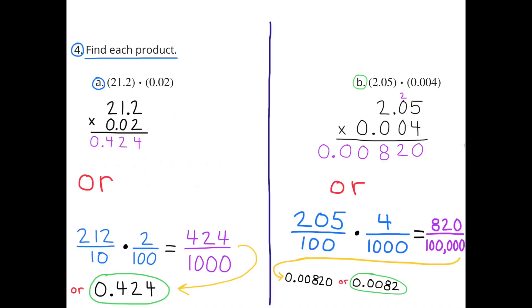Problem B: 2 and 5 hundredths times 4 thousandths. Again, you can set it up as a multiplication problem like I did on the top and the right-hand side. Or, you can set it up as multiplying fractions like I did on the bottom. 2 and 5 hundredths is the same as 205 hundredths. 4 thousandths is 4 over a thousand. So, 205 hundredths times 4 thousandths equals 820 hundred thousandths. Or, 0.00820. But you don't need that zero on the right-hand side so you can write it as 82 ten-thousandths.